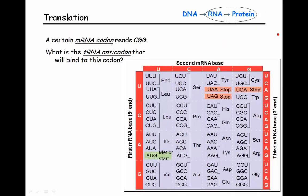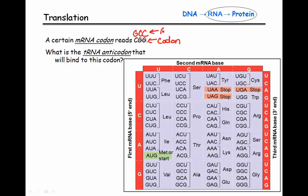Looking at this question, we have a certain mRNA codon that reads CGG and we want to know what is the tRNA anticodon that will bind to that codon. All we have to do is look for something that's going to be complementary to this. So GCC would be the complementary sequence — CGG is our codon and GCC is our anticodon.